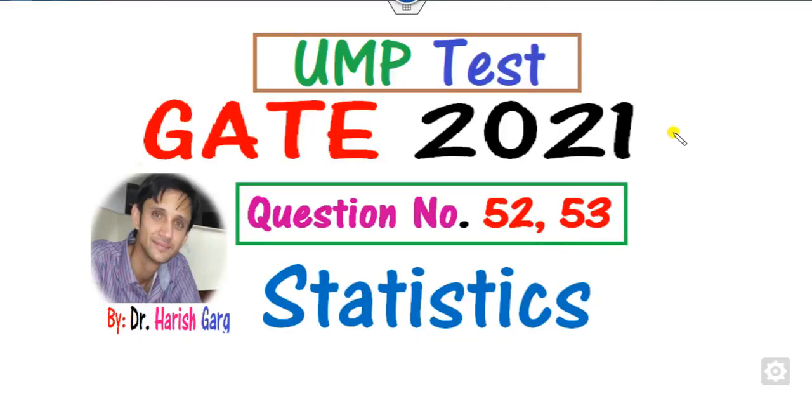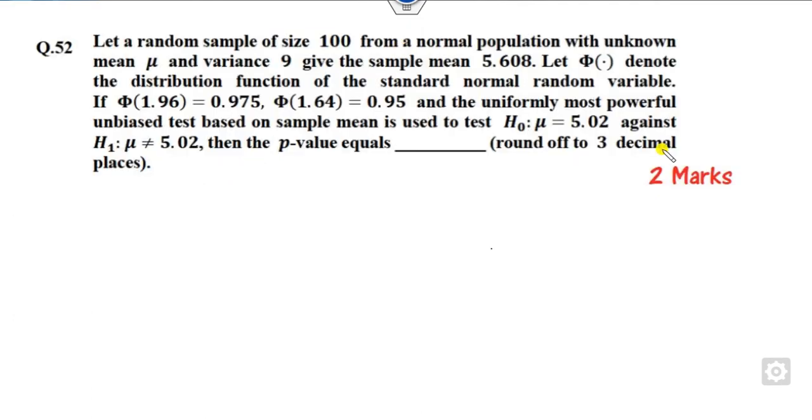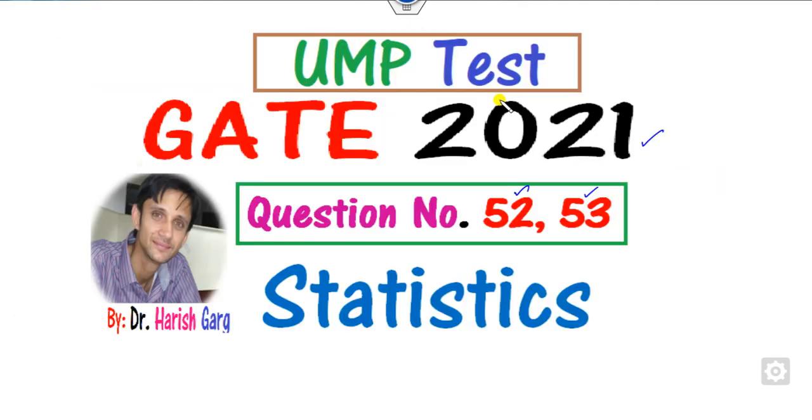Hello everyone, welcome to the next lecture on the GATE 2021 statistics. Today we will discuss these two questions, 52 and 53, related to the UMP test. What is the UMP test? That is called the uniformly most powerful test.